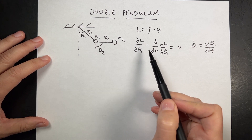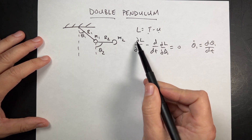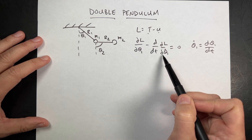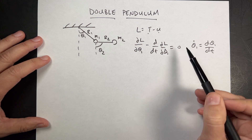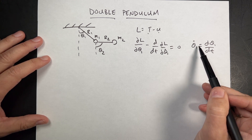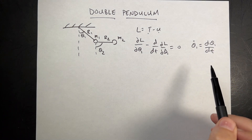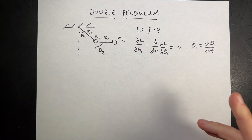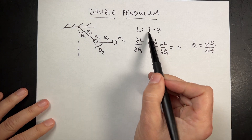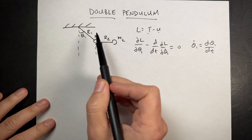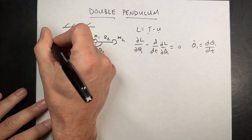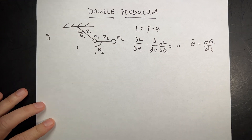I have two variables, so I'm going to have two equations. One of them will say the partial of L with respect to theta 1, minus the derivative with respect to time of the partial of L with respect to theta 1 dot, equals zero — where this dot notation represents the derivative with respect to time. The problem is that I need to get kinetic and potential energy in terms of theta 1, theta 2, M1, M2, R1, R2, and G.